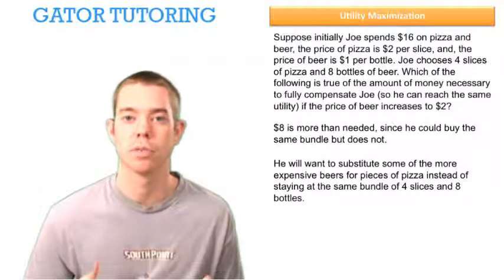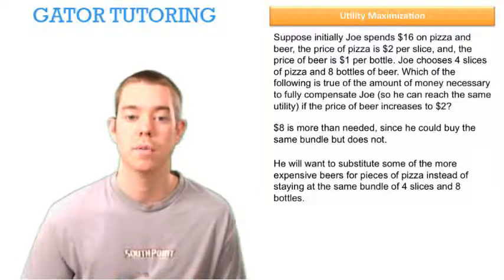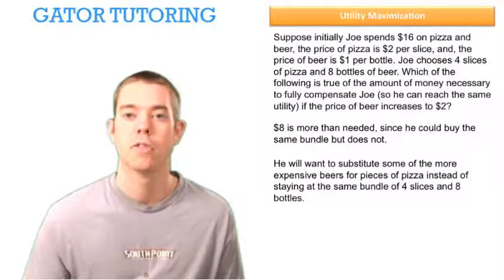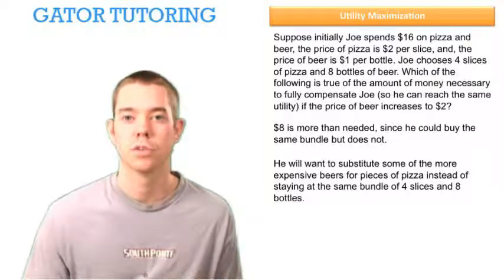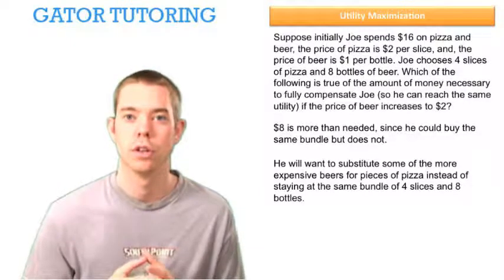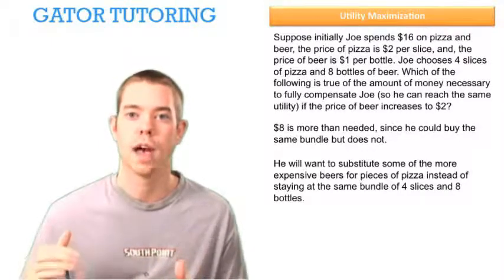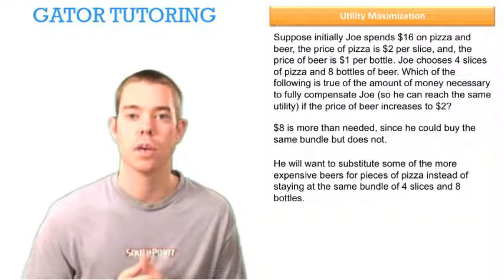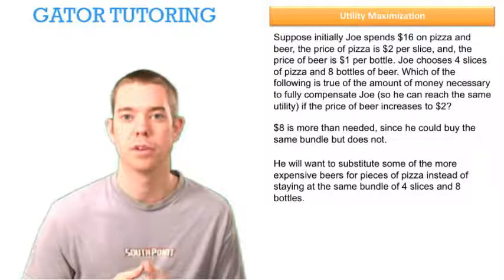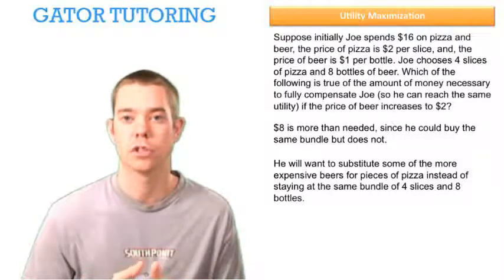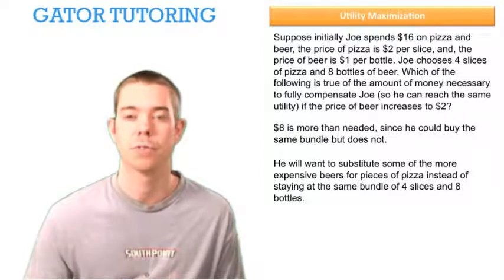Now that beer has doubled in price, he may want to substitute some of those more expensive bottles of beer for pieces of pizza. This is what you want to remember: for all consumers, if you consider their utility functions and that curve, as the price of beer increases, he's going to want to substitute some of that beer out for pizza.